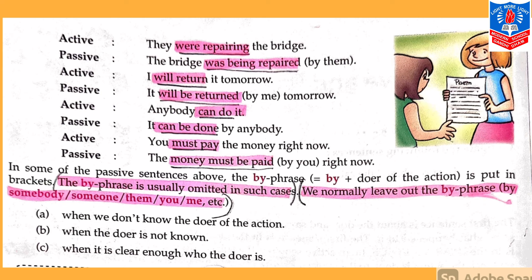The by phrase is usually omitted in certain cases. We normally leave out the by phrase — by somebody, by someone, by them, by you, by me, etc. — in the following cases: first, when we don't know the doer of the action; second, when the doer is not known at all from the sentence; and third, when it is clear enough who the doer is and the information is already given in the question.